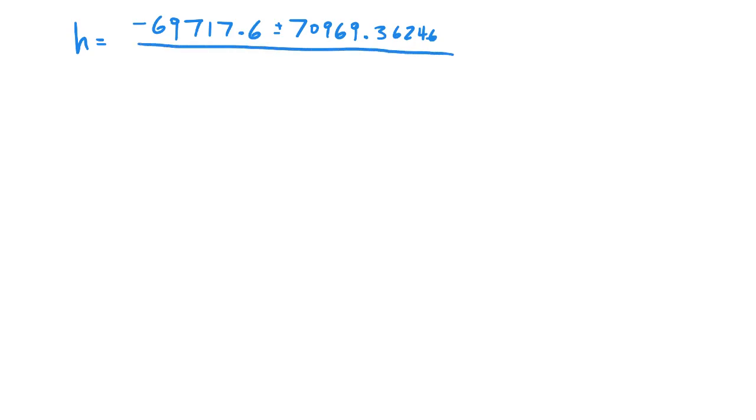Once I typed everything into my calculator in the quadratic formula, all the numbers under the radical, I get plus or minus 70,969.36246 all over 6. We're going to get two answers, one where we're adding that second number, one where we're subtracting. My two answers, if I add the 70,000, I'm going to get 208.627 and change. And my second answer would be negative 23,447.927. This would be a negative horizontal distance. So obviously, that value is going to be rejected.